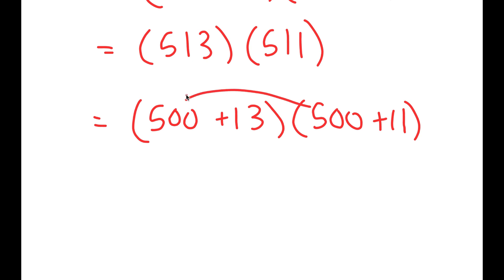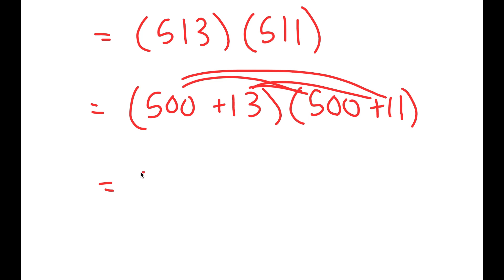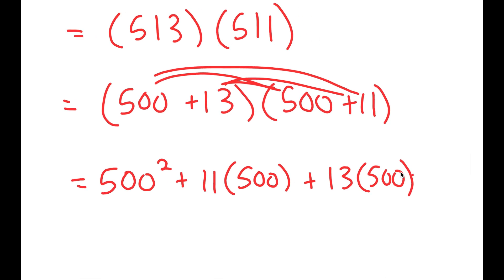So now to solve this, I'm going to distribute the 500 and distribute the 13. So this turns into 500 squared plus 11 times 500 plus 13 times 500 plus 13 times 11.